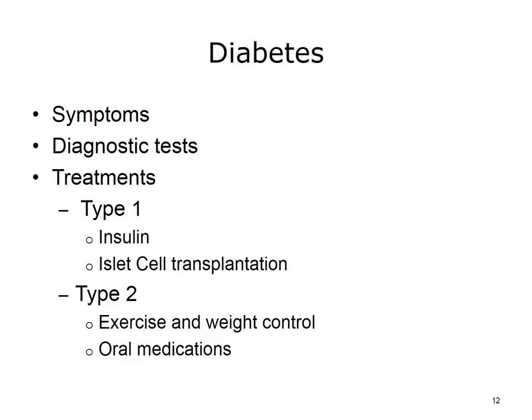Symptoms of type 1 diabetes include being very thirsty, urinating frequently, feeling very hungry or tired, losing weight without trying, having sores that heal slowly, having dry itchy skin, losing the feeling in your feet or having tingling in your feet, and having blurry eyes. A blood test can determine if you have diabetes. If diagnosed with type 1 diabetes, you will probably have to take insulin for the rest of your life. There is a new experimental treatment which transplants islet cells from an organ donor, providing a natural source of insulin.